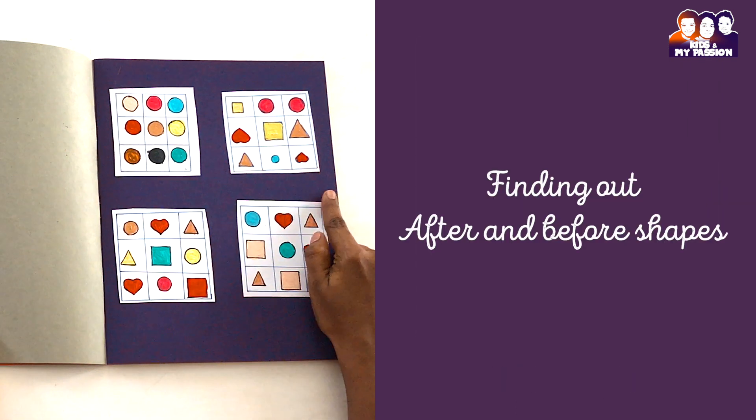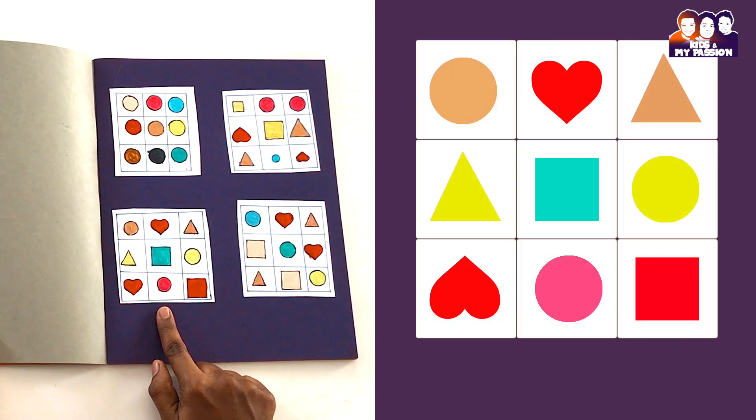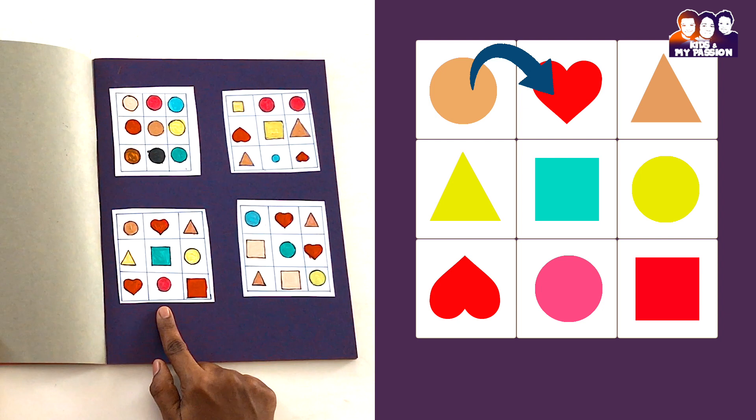Third picture: finding out the after and before shapes. You can ask your kid, in the first row, after cream circle, what is the shape? It's heart. And in the second row, what is the before shape before yellow circle? That is square.